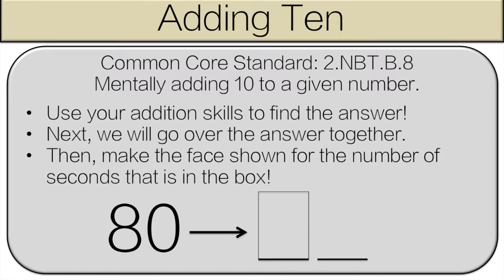Now, I know that last part is a little confusing, so we're going to go over it before we start. So, we look at the number 80. What is 10 more? 90. Looking at 90, what number is in the box? 9. So, that means you have to make that face for 9 seconds. Let's get started.